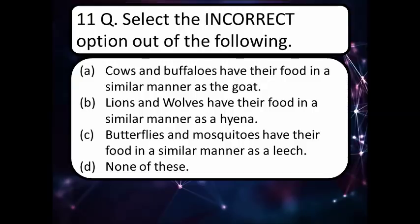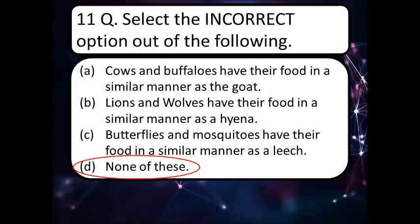Select the incorrect option out of the following. Option A: cows and buffaloes have their food in a similar manner as a goat. Option B: lions and wolves have their food in a similar manner as a leech. Option C: butterflies and mosquitoes have their food in a similar manner as a leech. Or option D: none of these. The correct answer is option D, none of these — meaning all the above options are correct.